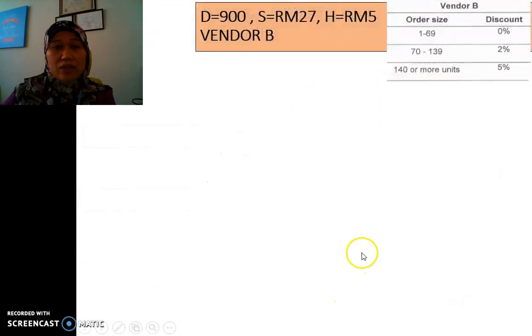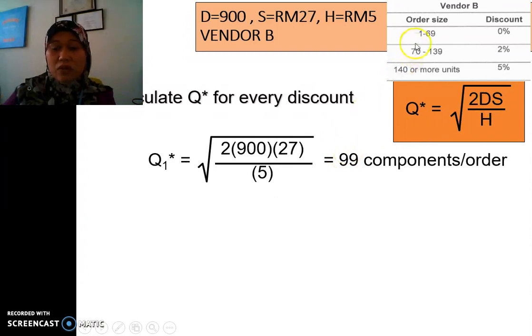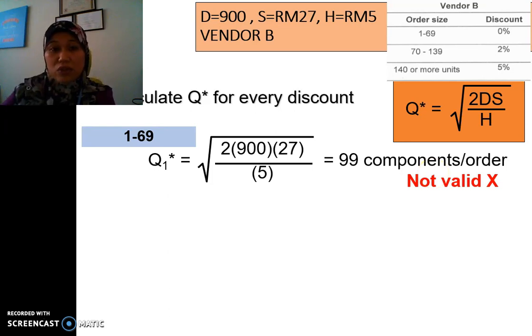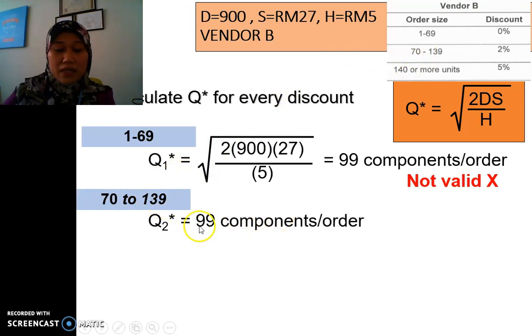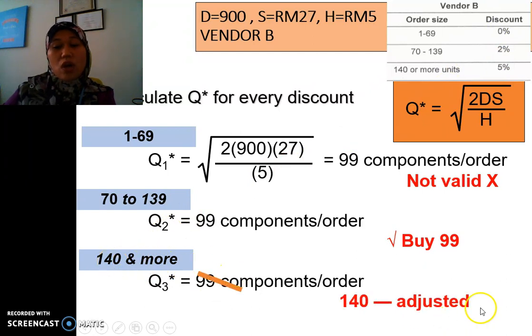Next, we look at vendor B. And these are the vendor B order size rules. The Q should be the same because all the D, S and H is the same. So it's going to be 99. We test for the first order size, 1 to 69. 99 is not within the range. So it's not valid. We don't need to calculate for the total cost. And then we check for the second one, 70 to 139. We can buy 99 within the range. Then for the third one, 140 and more. We need to buy 99, but it's not within the range to get a 5%. So minimum that we can buy is 140. So we need to adjust to 140.